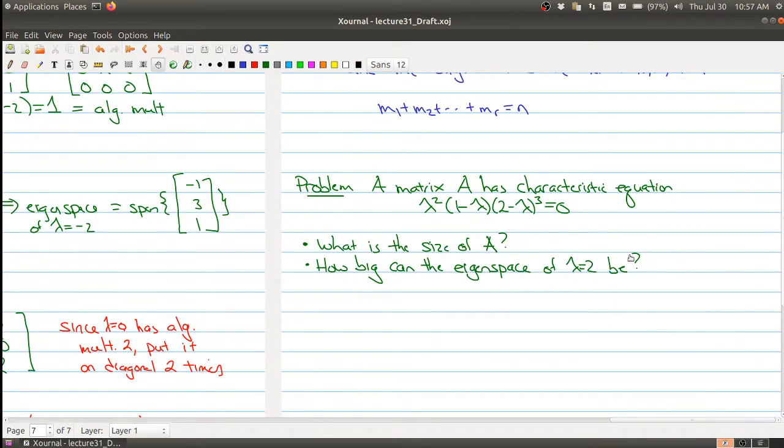Say that I tell you, here's a matrix, and it has a characteristic equation given by lambda squared, 1 minus lambda, 2 minus lambda raised to the power of 3. And so one question we could ask is, what is the size of A?